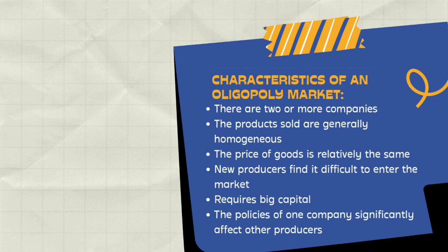The third characteristic is that the prices of goods in the market are relatively the same. Even if there is a difference, it is not too big. For example, the price of brand A at one store will not be much different from the same brand at another store. This is due to pricing policies determined by the main producers, so other producers adjust accordingly.